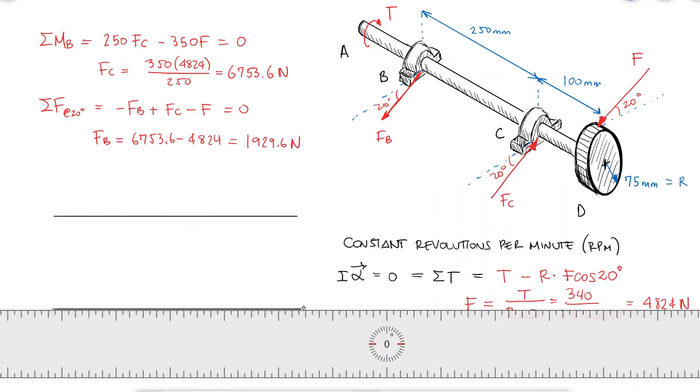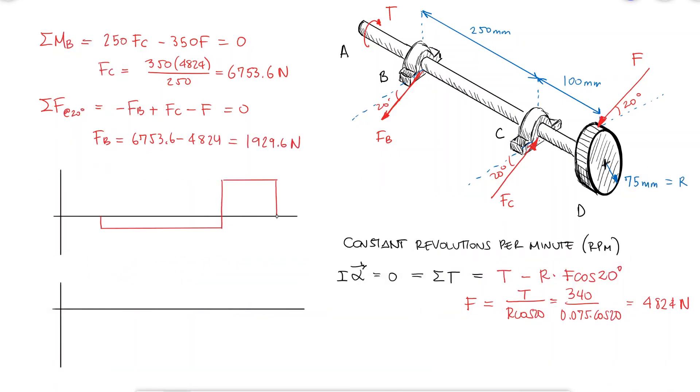A bending moment diagram would show us that the maximum moment occurs at C, where there's a stress concentration due to the fillet of the holder C. The normal stress caused by this bending moment will vary from a positive to a negative value depending on the location of the point on the surface of the shaft. This means that this value is the alternating moment.